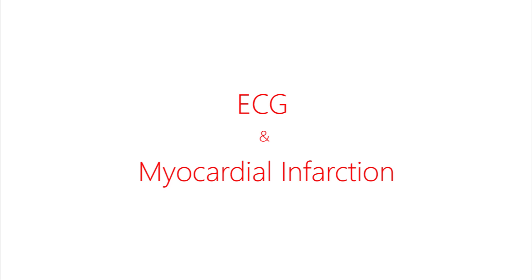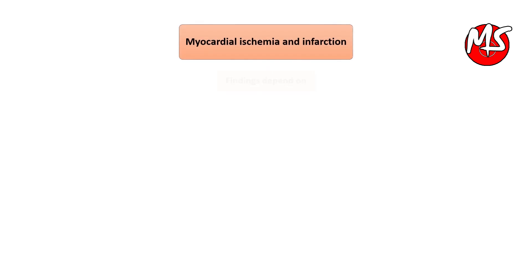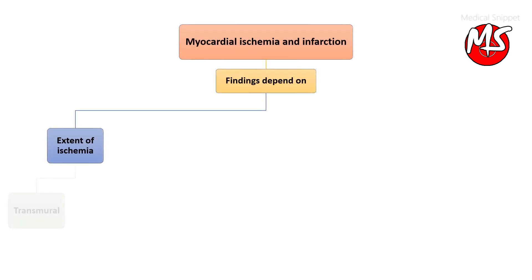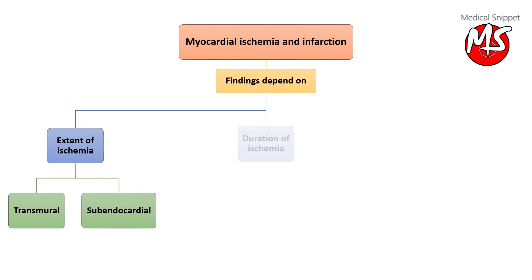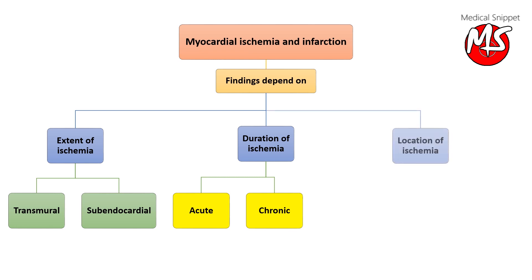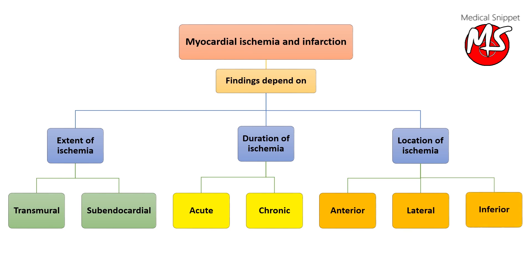ECG changes in myocardial infarction. The findings depend on the extent of ischemia, whether it is transmural or subendocardial, the duration of ischemia, whether it is acute or chronic, and lastly the location of ischemia, whether it is anterior, lateral, or inferior wall myocardial ischemia.